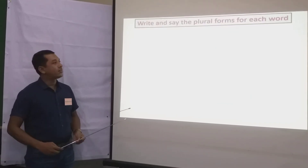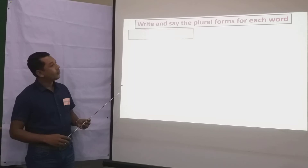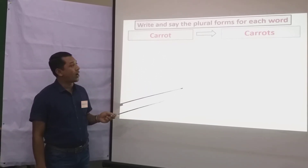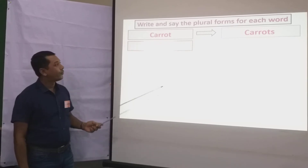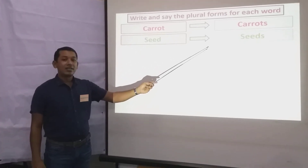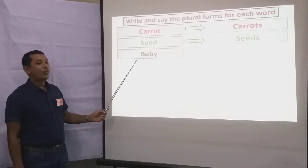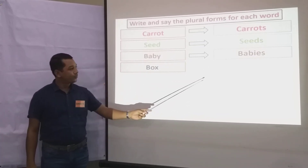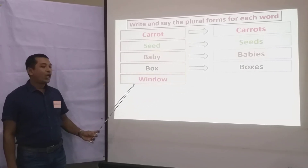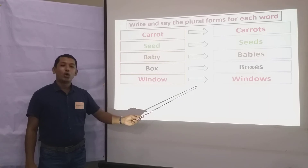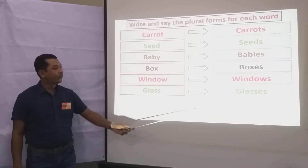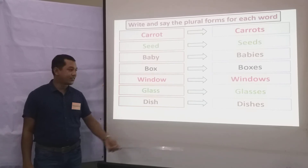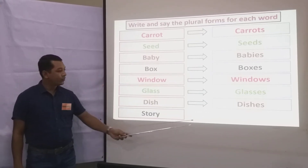Okay, my dear students, now here is the word carrot — carrots. Seat — seats. Baby — babies. Box — boxes. Window — windows. Glass — glasses. Dish — dishes. Story...